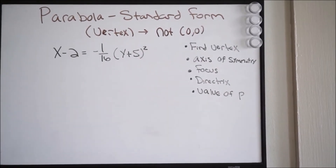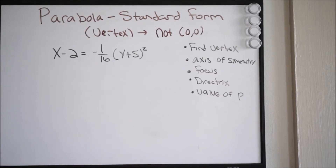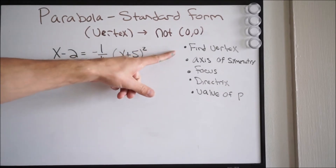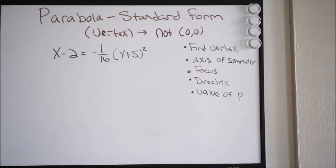So here is our example. Before we try this, I highly suggest you go back and watch the previous video where we talked about how to write a parabola in standard form when the vertex was at (0,0). Please watch that video before trying this problem, because it's going to build off each other. So we're given the following equation of a parabola, and they want us to find the vertex, the axis of symmetry, the focus, the directrix, and the value of p.